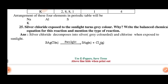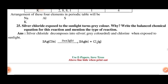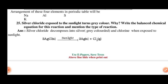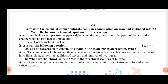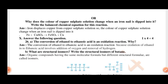Silver chloride exposed to sunlight turns grey colour. Why? Write the balanced chemical equation for this reaction and mention the type of reaction. Why does the colour of copper sulphate solution change when an iron nail is dipped into it? Write the balanced chemical equation: Fe plus copper sulphate CuSO4 gives FeSO4 (ferrous sulphate) plus copper.